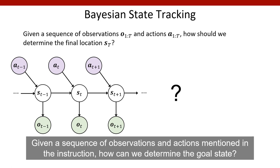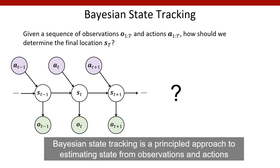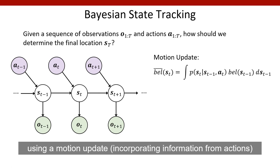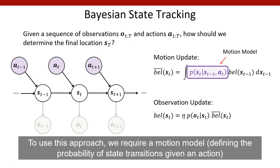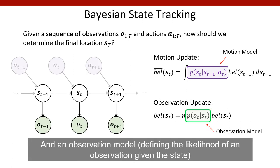So given a sequence of observations and actions mentioned in the instruction, how can we determine the goal state? Bayesian State Tracking is a principled approach to estimating state from observations and actions, using a motion update incorporating information from actions, and an observation update incorporating information from observations. To use this approach we require a motion model defining the probability of state transitions given an action, and an observation model defining the likelihood of an observation given the state.